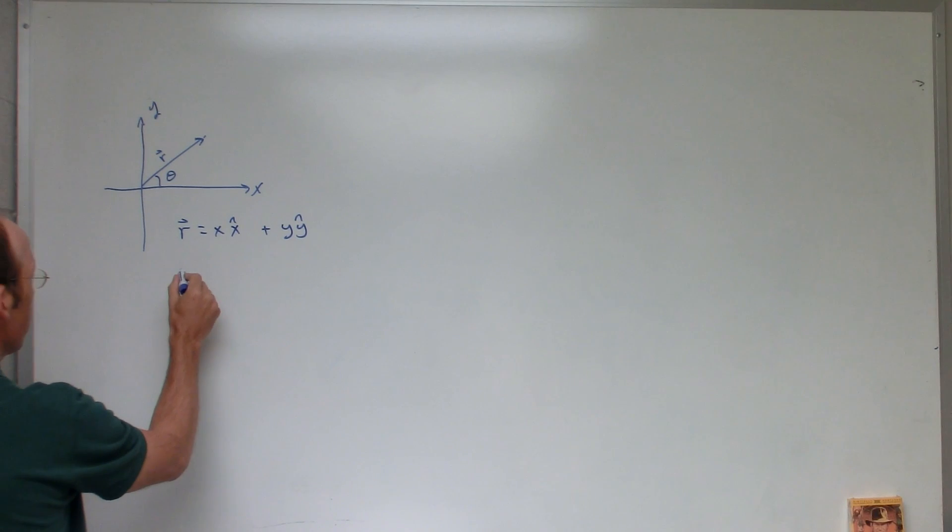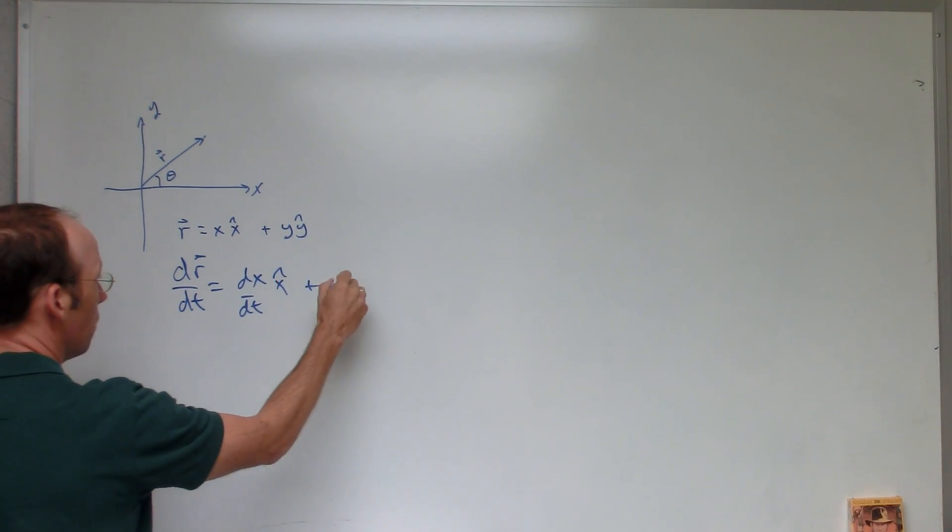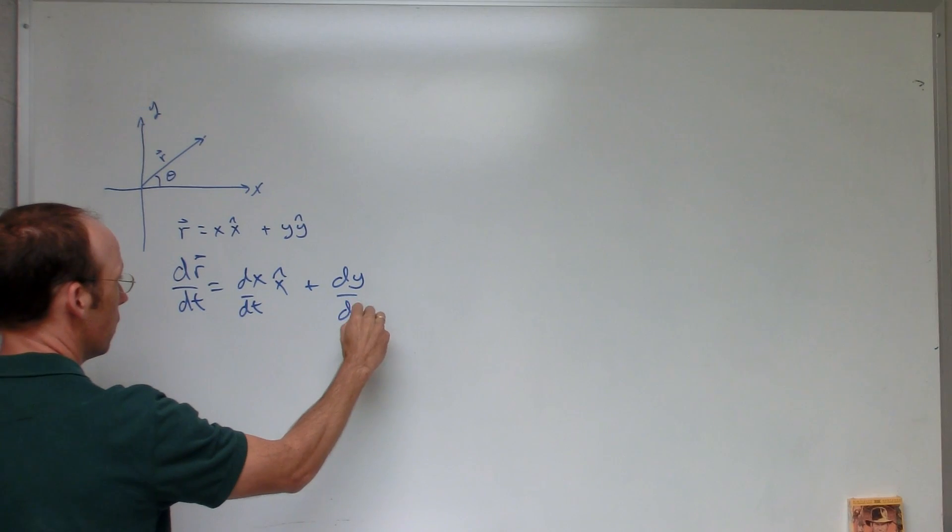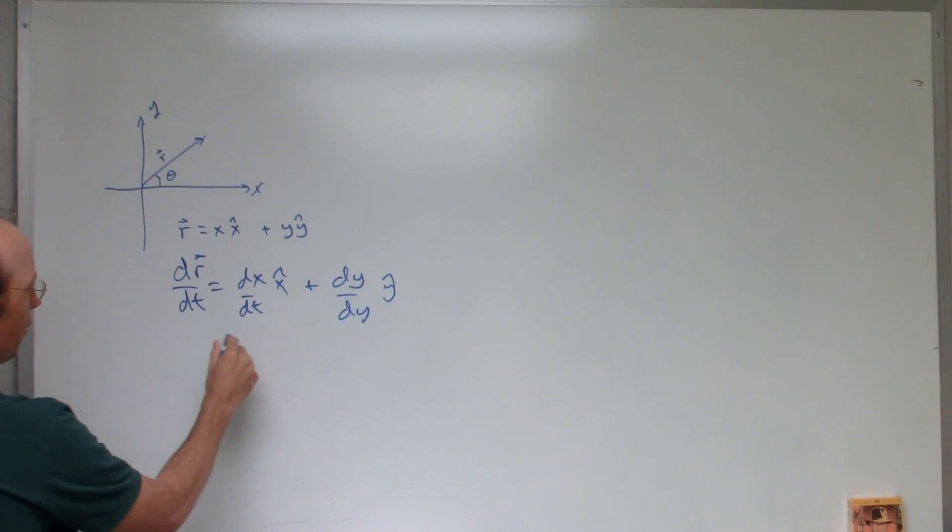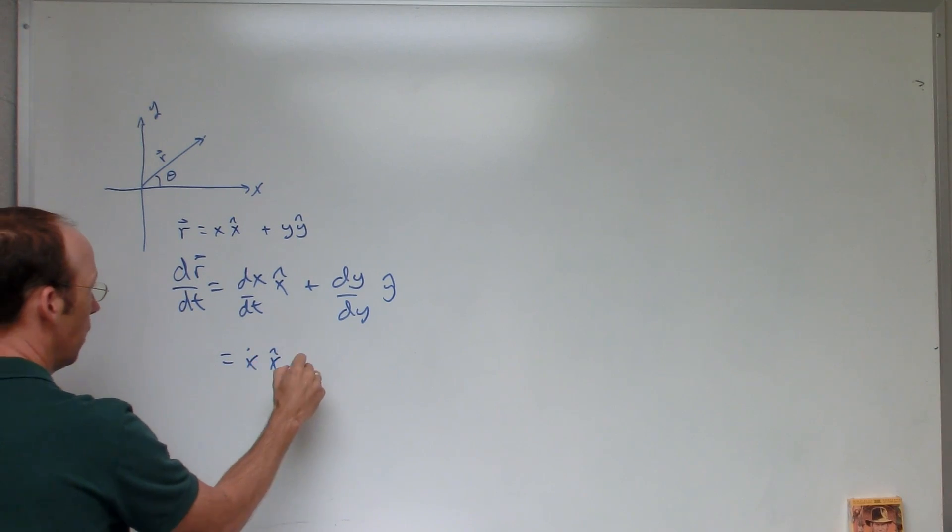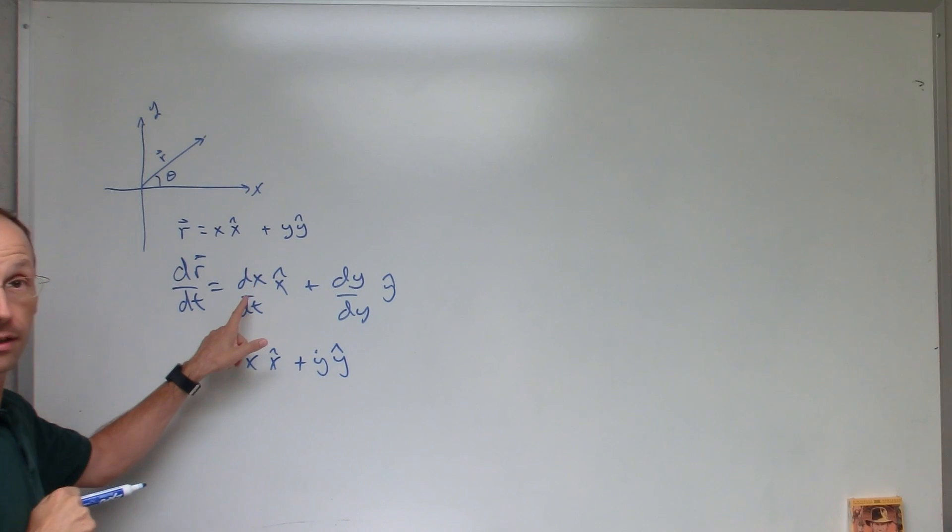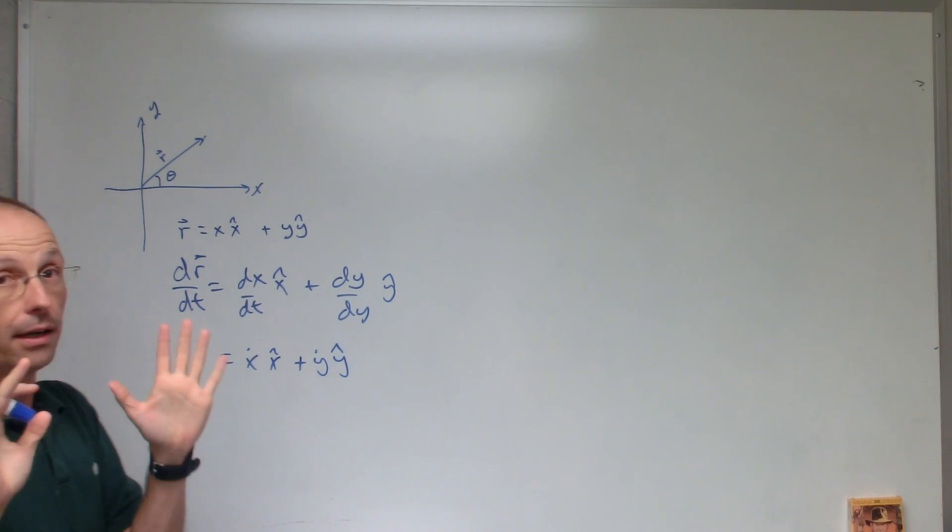If I want the velocity in Cartesian coordinates, I can just take the derivative of r with respect to t, and I get dx/dt x hat plus dy/dt y hat. I can write that as x dot x hat plus y dot y hat, where x dot is the derivative of x with respect to time.